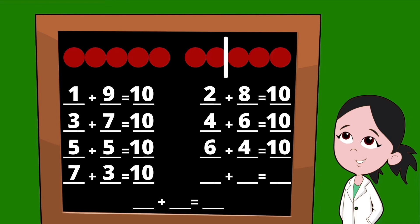Let's slide that line over — we're getting close to the end. Now, how many dots are on the left side of our line? Eight. So our first partner is the number eight. To the right of our line, we have just two dots, so the next number for this set of partners is the number two. Eight plus two equals 10.